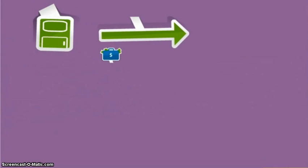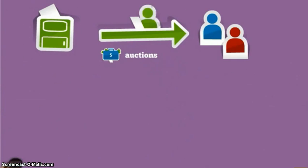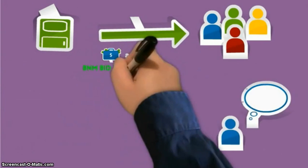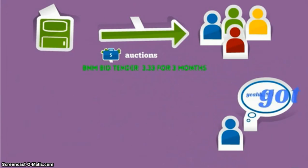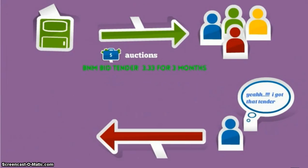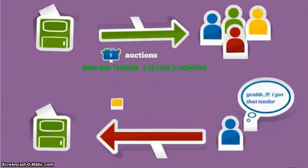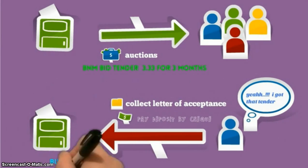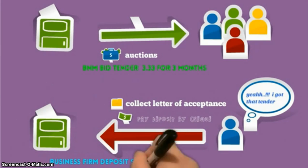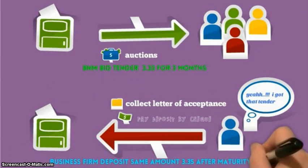We show you the flow where BNM bids the tender to the public and BNM chooses the business firm. The business firm needs to collect the letter of offset term and in return pays a deposit by check to BNM.